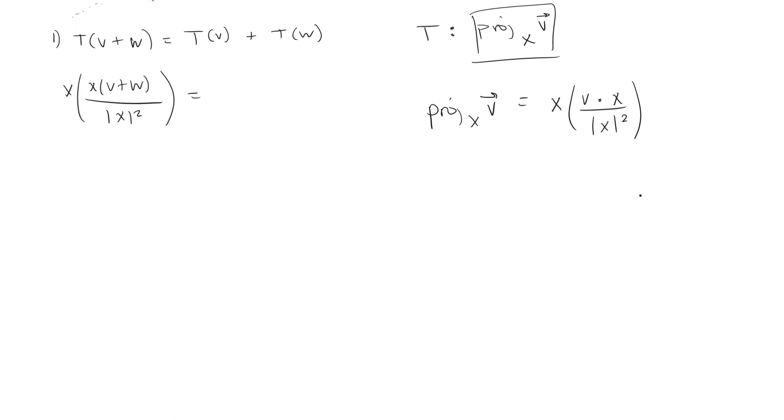Now the right side is going to be, conveniently, the transformation of V is just this formula. X times V times X over the length of X squared plus X times W times X over the length of X squared. I'm going to put everything in the numerator because these denominators are the same. In the numerator, we have X V times X plus X W times X all over X squared. Then we can factor out an X, and what we're left with is V times X plus W times X all over the length of X squared.